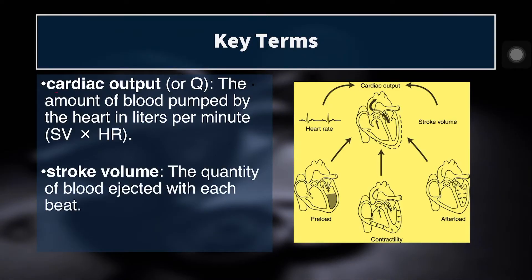Some key terms to know: cardiac output, usually designated by an uppercase Q, sometimes with a dot over it meaning cardiac output per minute. Stroke volume is the amount of blood your heart pumps with every single beat, and heart rate is the number of beats per minute. If you take heart rate times stroke volume, that gives you the amount of blood your heart pumps per minute — which is cardiac output.